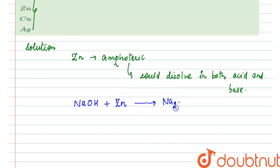We get Na2ZnO2 and hydrogen gas is evolved. To balance this reaction, we will have to take two moles of NaOH and the reaction is balanced.